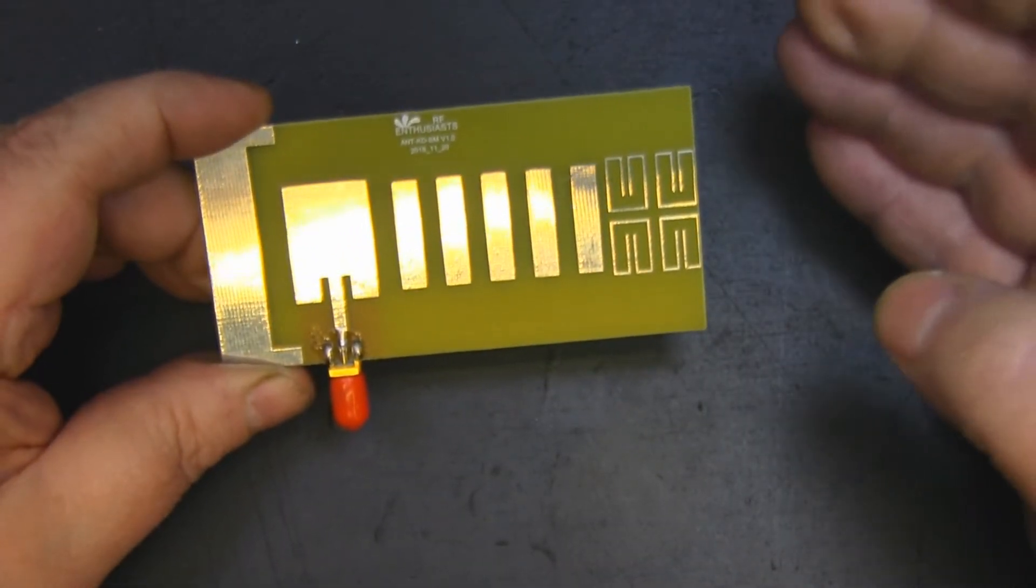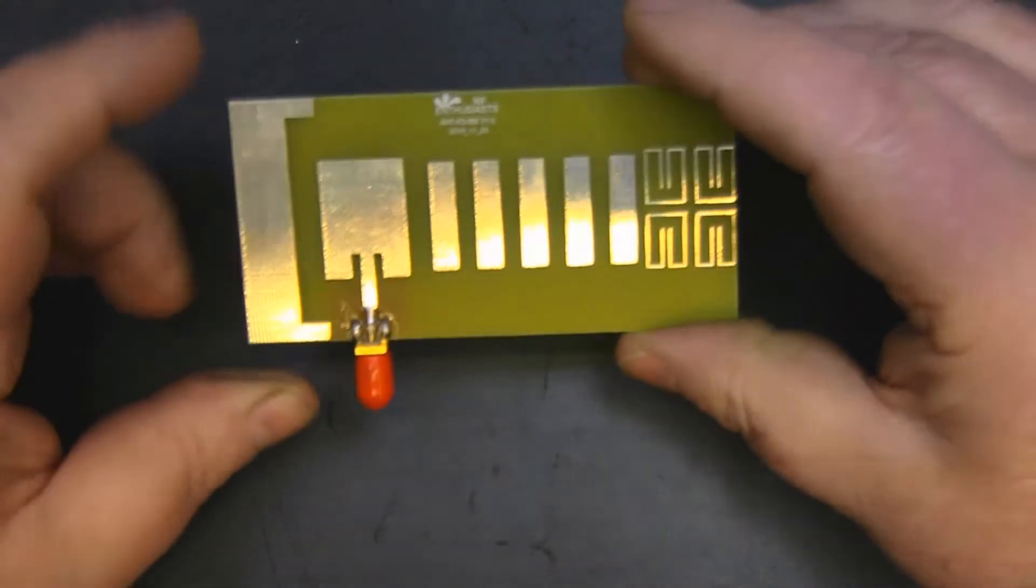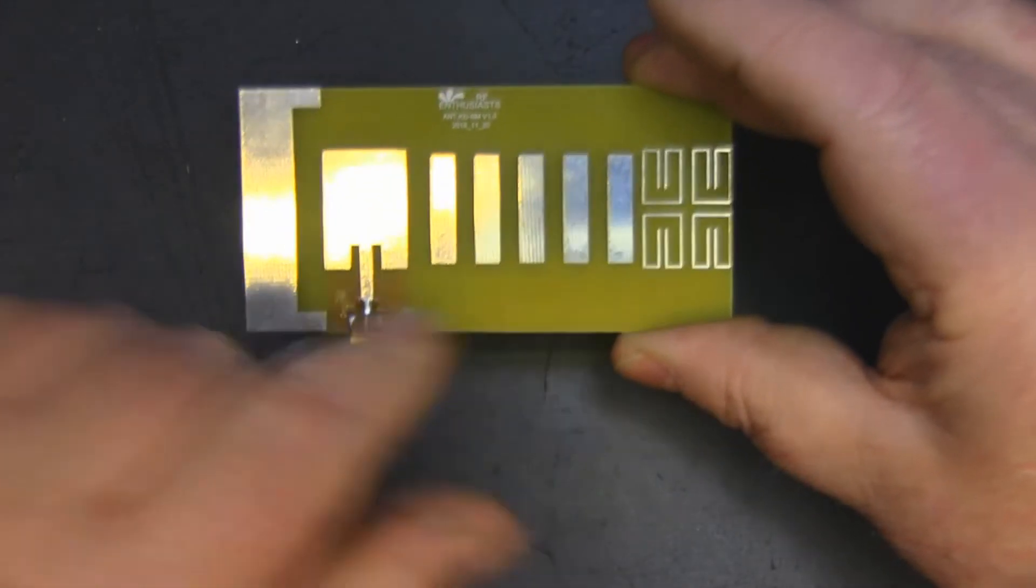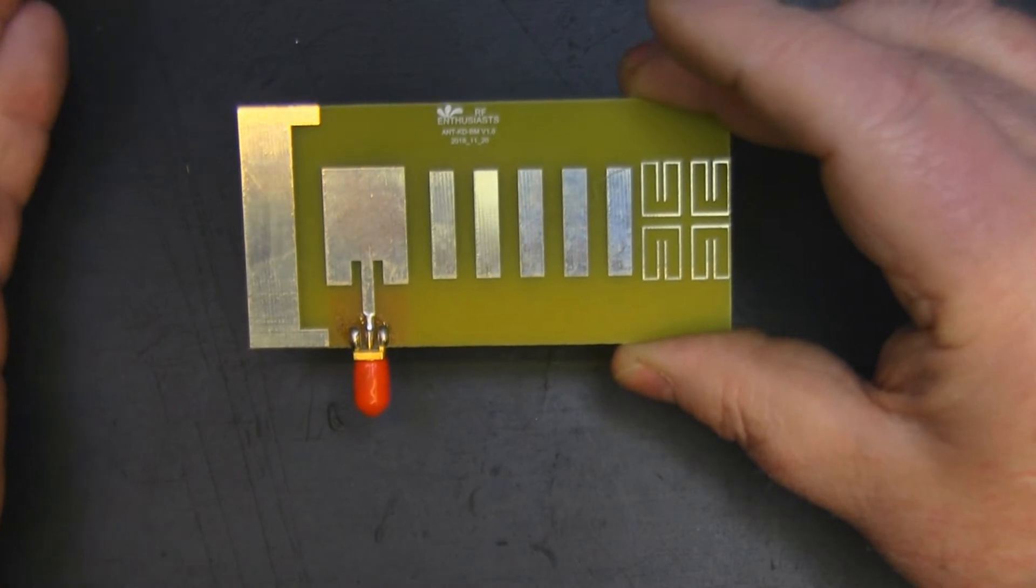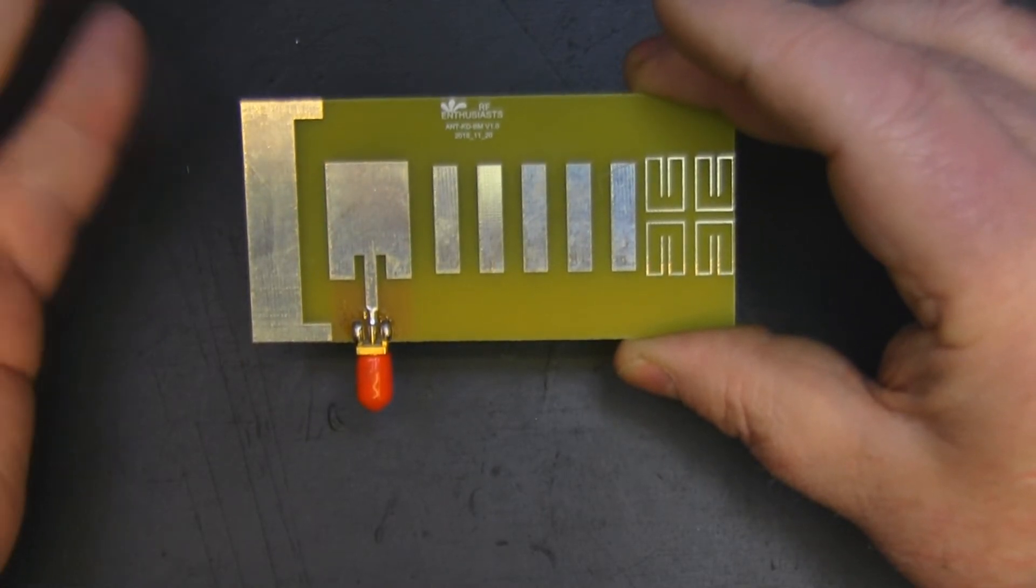The things that intrigue me with this is, well the first thing is the fact that this is a patch antenna feeding the Yagi. You don't normally see that, normally nine out of ten times it's a folded dipole of some description, but this is interesting.